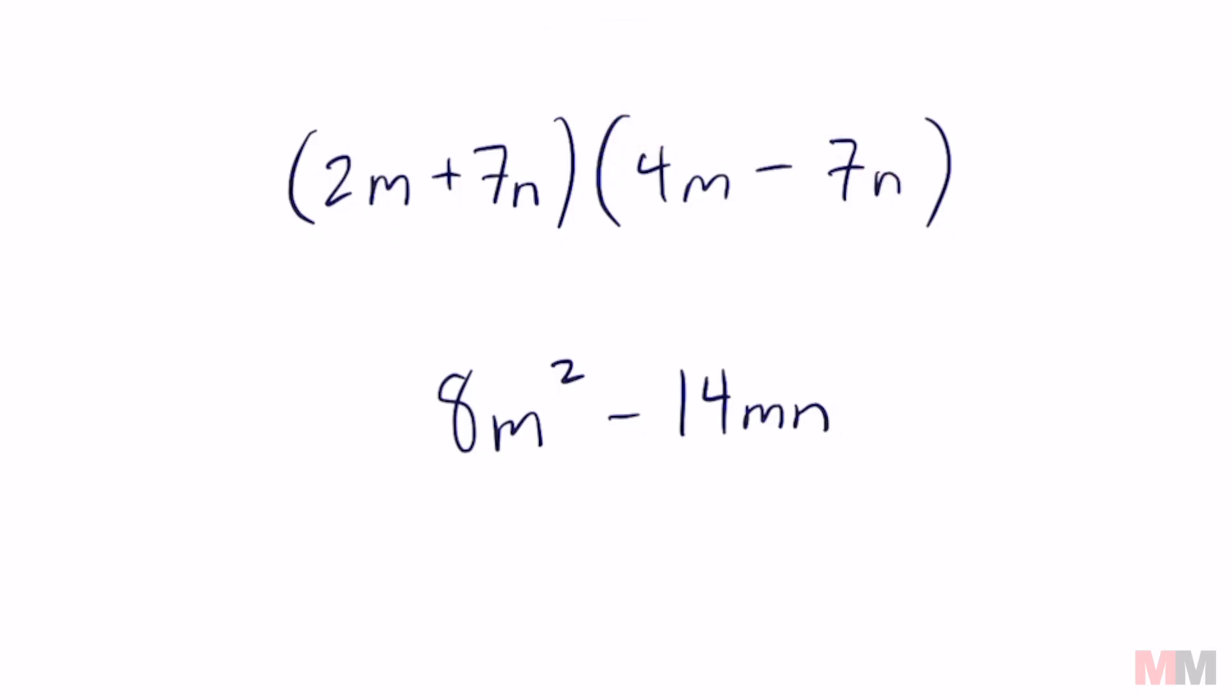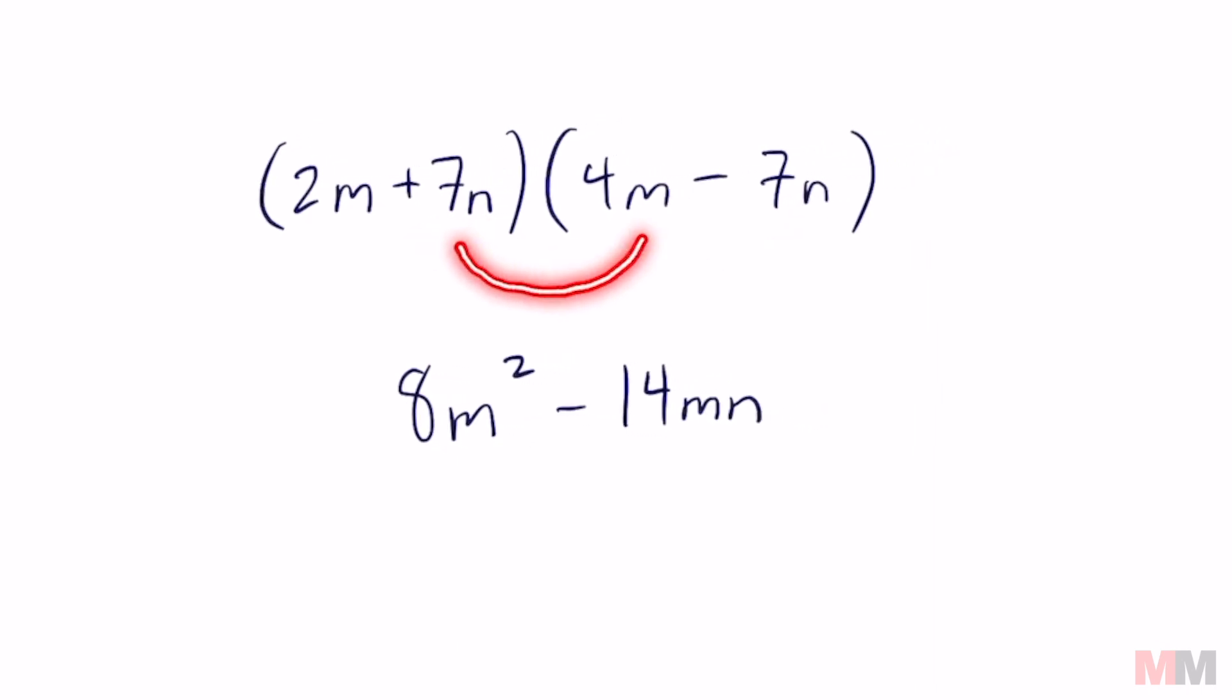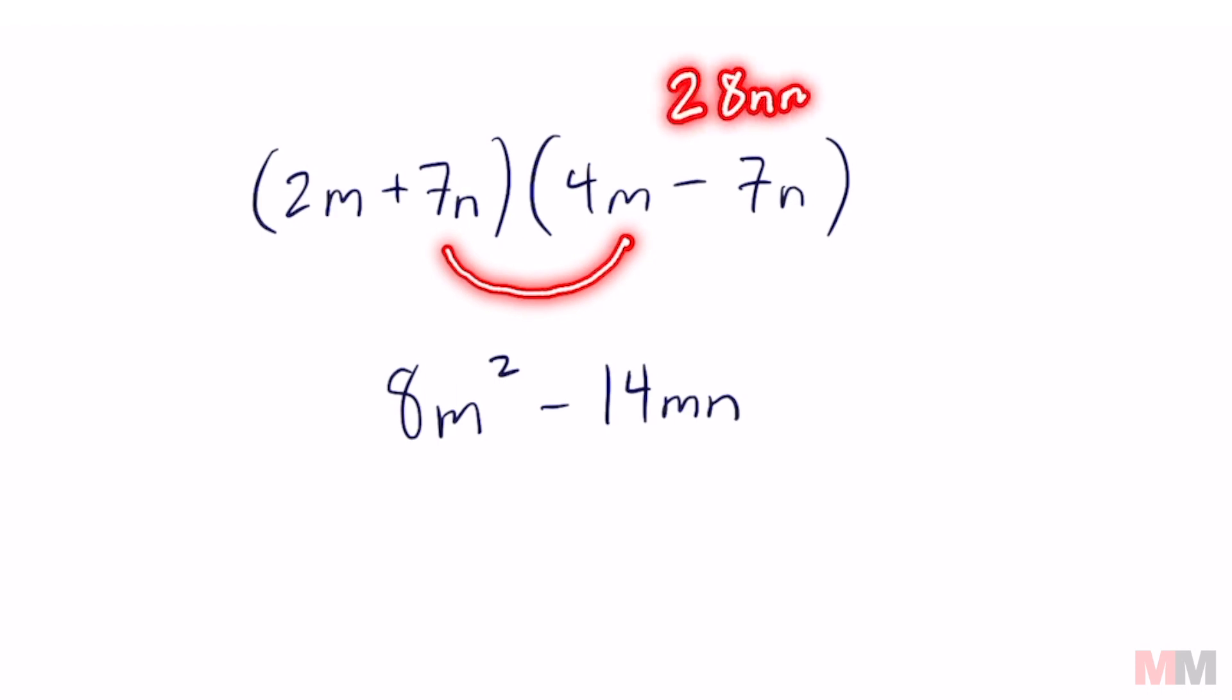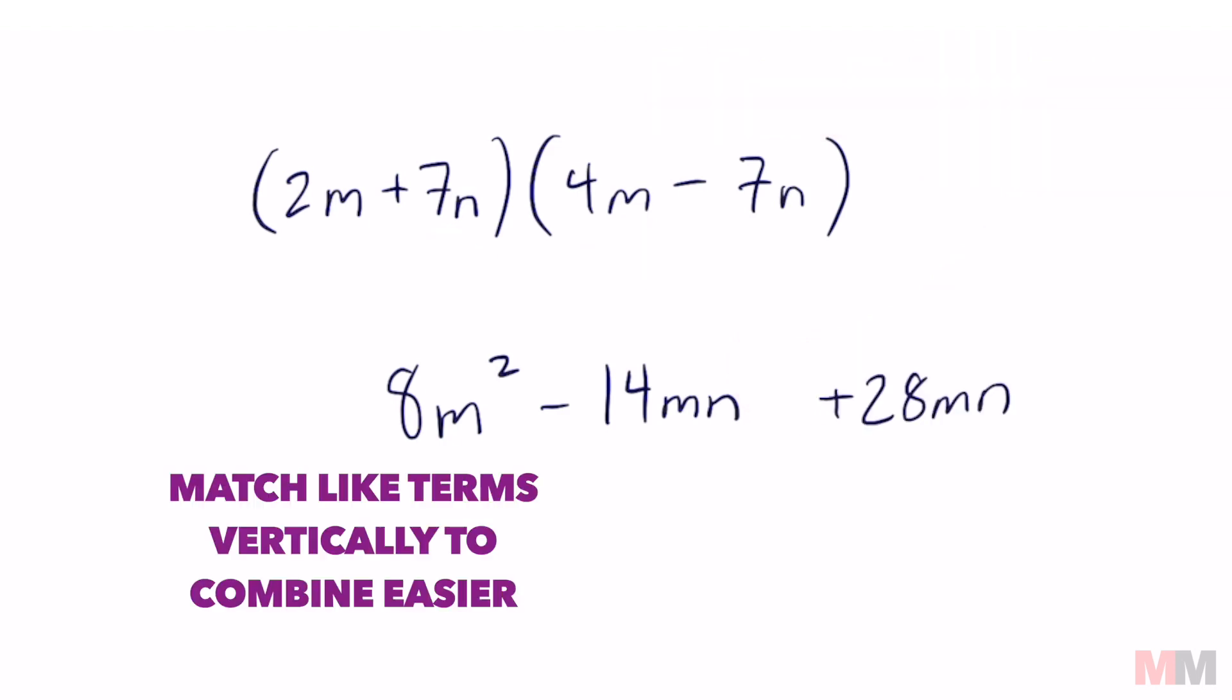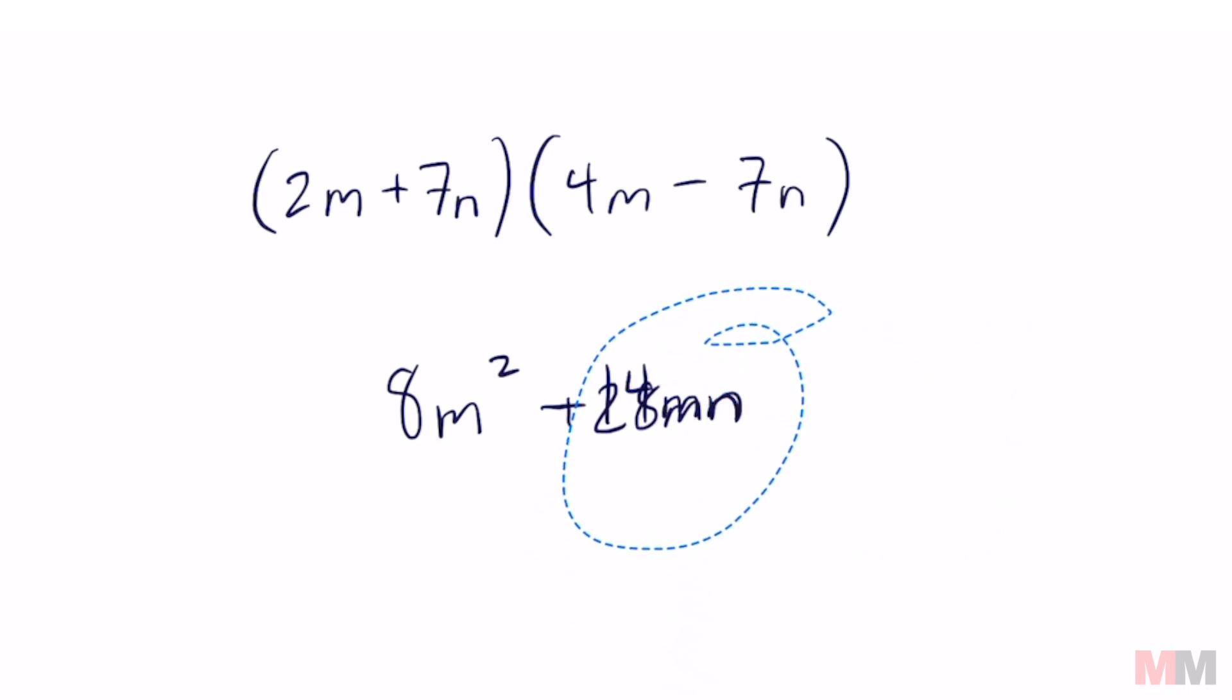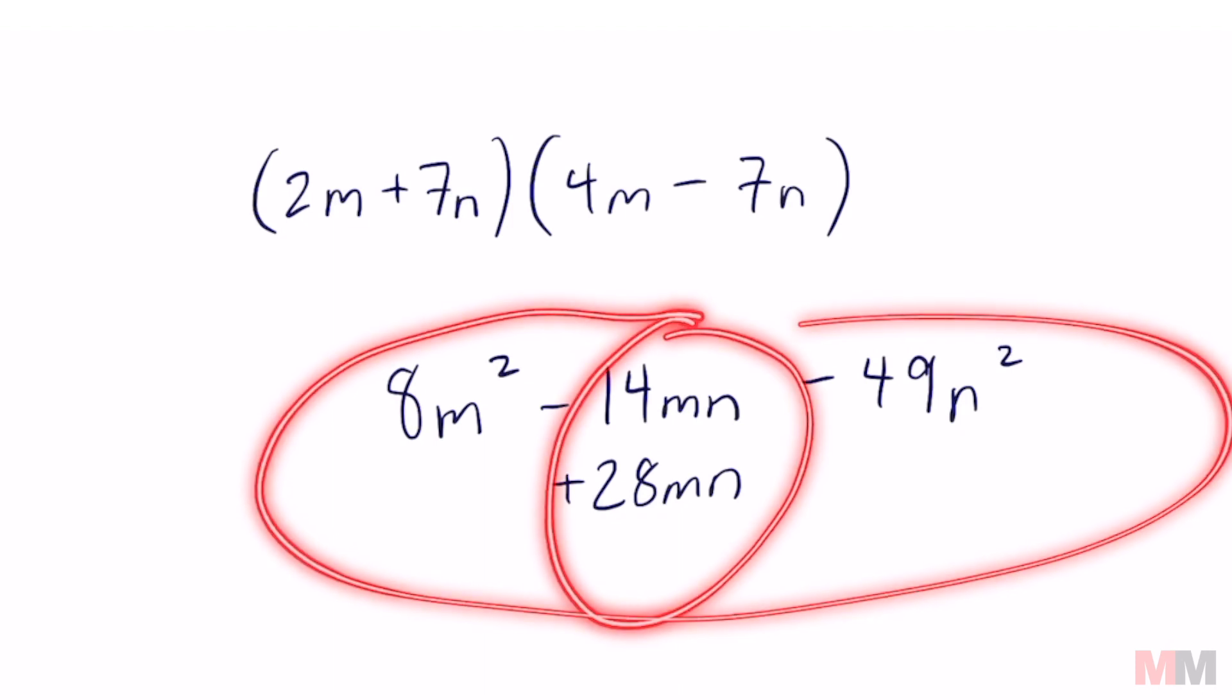Now that I'm done distributing this, we're going to move on to the other term right here which is 7n and do the same thing. So 7n times 4m is 28nm, but that is the same thing as 28mn, and that is important because we're going to end up combining it with this term right here. That is also the reason why you want to put them into alphabetical order. If they are like terms, this is just my own style, instead of writing it here might as well put it down here that way you know they are like terms and match. The last part you're going to multiply is 7n times negative 7n which is going to result in negative 49n squared.